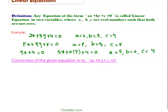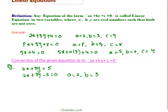Now we learn how to convert a given equation into the form ax plus by plus c equal to 0. Take an example: convert the equation 2x plus 3y is equal to 5 into the form ax plus by plus c equal to 0. This equation can be written as 2x plus 3y minus 5 equal to 0, which is clearly in the required form, where a is equal to 2, b is equal to 3, and c is equal to minus 5.